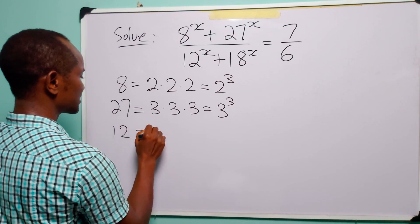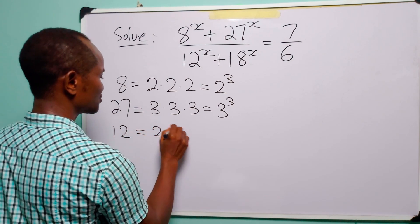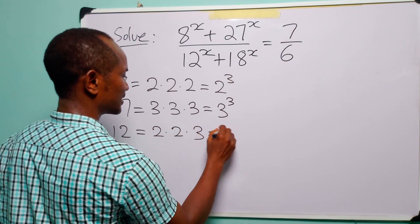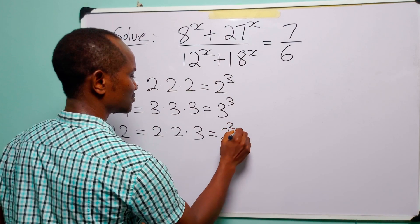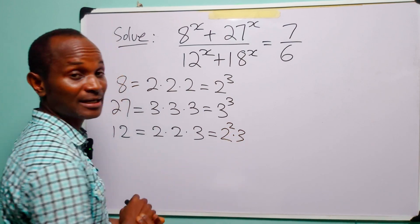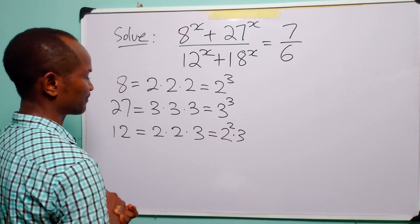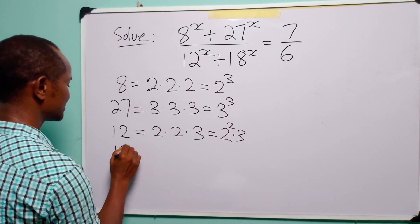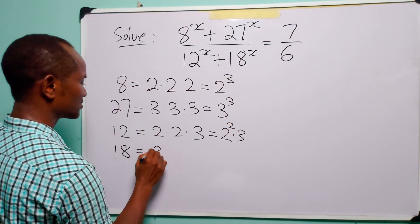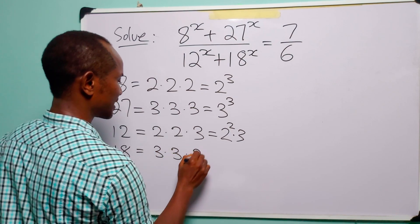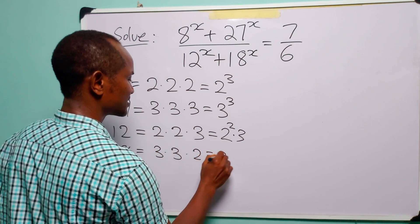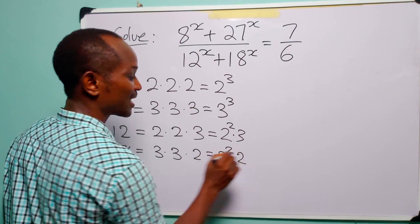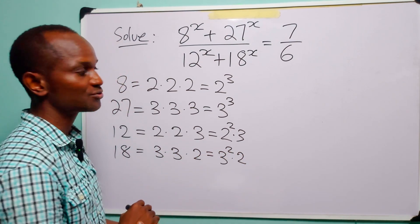12 is equal to 2 times 2 times 3, that is 2 to the power of 2 multiplied by 3. And 18 is equal to 3 times 3 times 2, that is 3 to the power of 2 multiplied by 2.